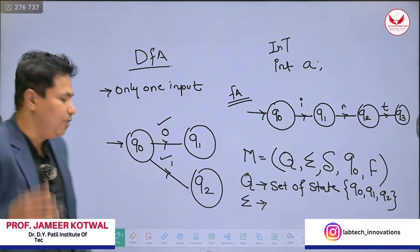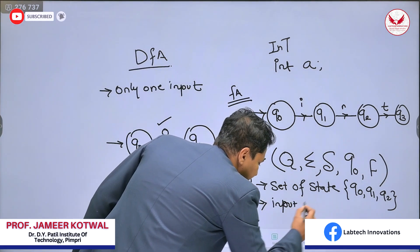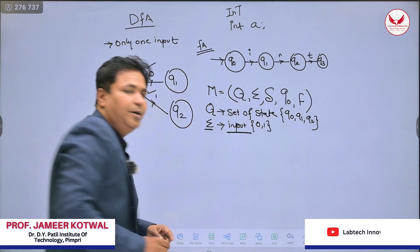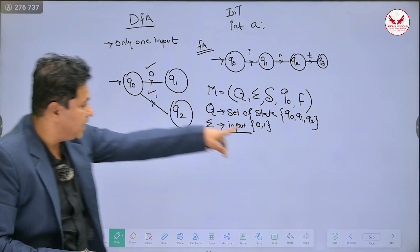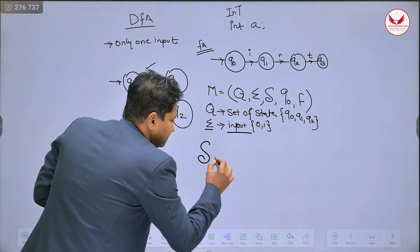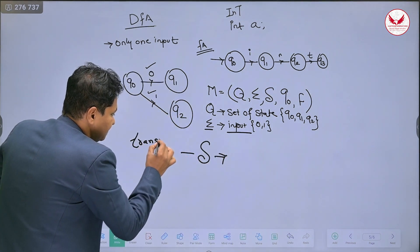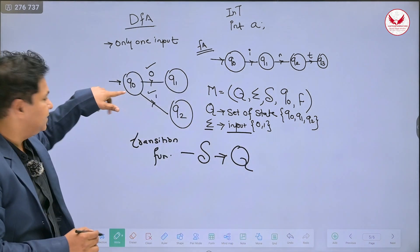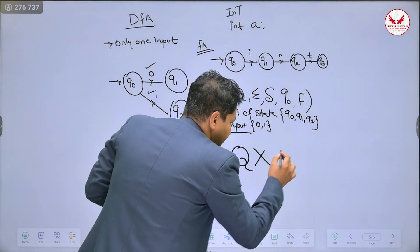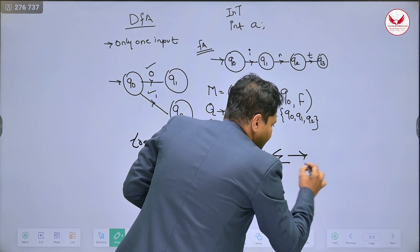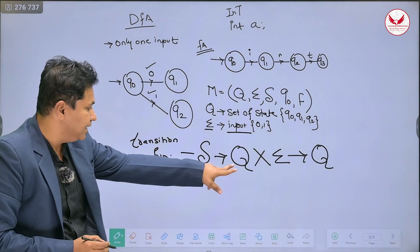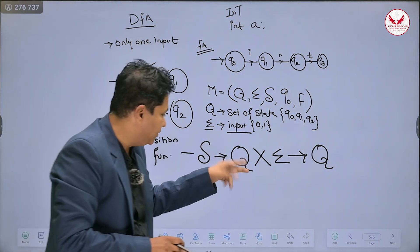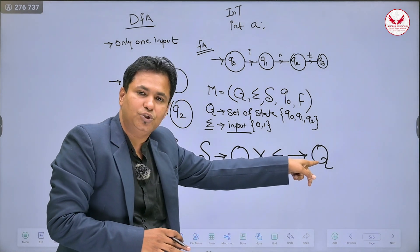Sigma represents the input — what input you have processed. Here we have processed input 0 and 1, so sigma is the set of inputs processed in the machine. Next is the transition function. The transition function means: in a state, you process an input and reach the next state. For example, in Q0, by processing input 0, it moves to state Q1.